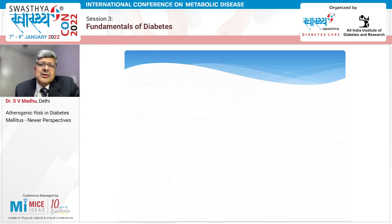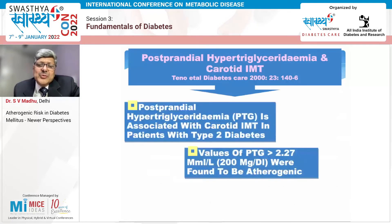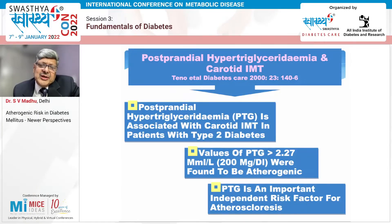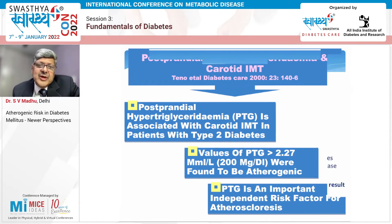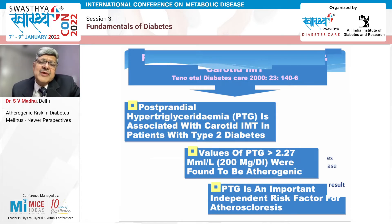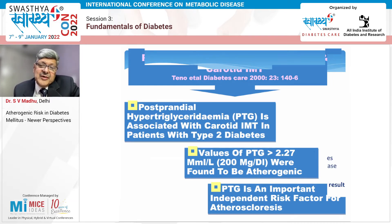We've shown that Indian type 2 diabetics and even pre-diabetics have significant abnormalities of postprandial TG metabolism, which could be a significant cardiovascular risk factor among Indians. A study by Tino et al. showed a link between high TG and CIMT, demonstrating a closer association as an important independent risk factor for atherosclerosis.